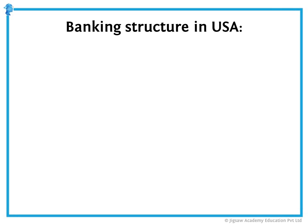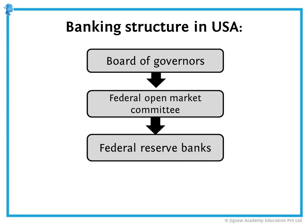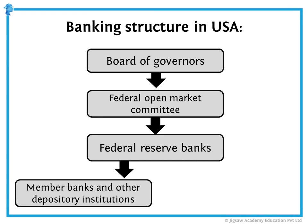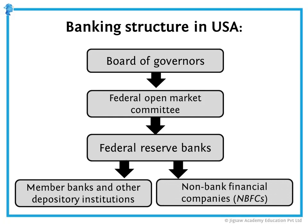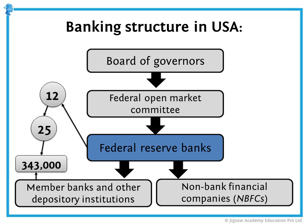Banking structure in the U.S.: The United States has a board of governors which oversees the Federal Open Market Committee. This Federal Open Market Committee monitors the Federal Reserve Banks, and then you have member banks and other depository institutions — just like in India, there are NBFCs — which report into and are monitored by the Federal Reserve Banks. The American people deposit their money with these member banks and other depository institutions, which are all commercial institutions. There are 12 Federal Reserve Banks with 25 branches, and some 343,000 member banks are regulated by these 25 Federal Reserve branches.